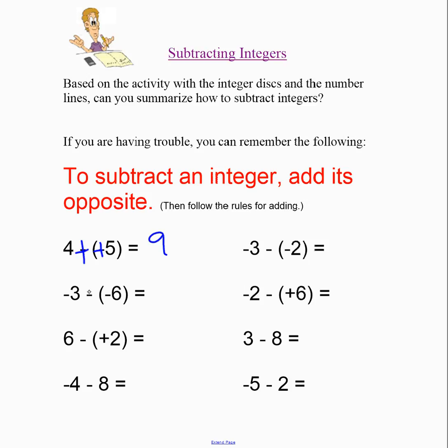Likewise, I can change this one into adding the opposite of negative 6, which will be positive 6. And now I can think, what's negative 3 plus 6? So I can move along the number line, or I can think in terms of what's the difference between those numbers, and I get 3.